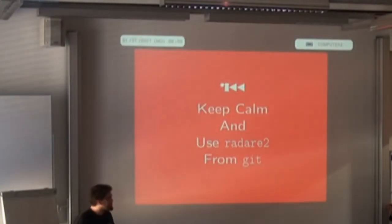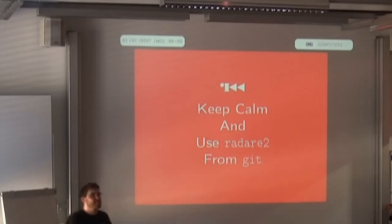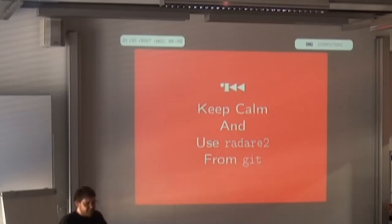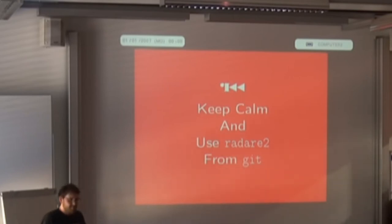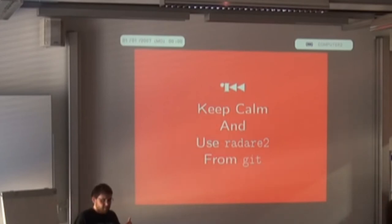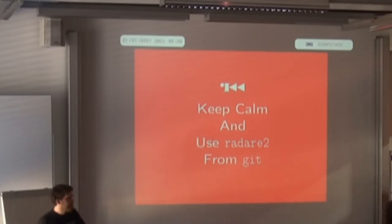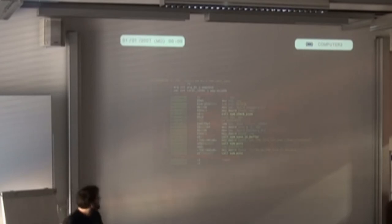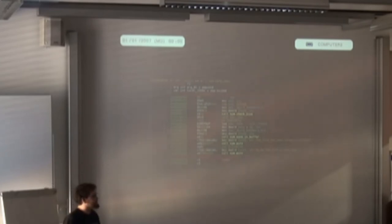Fortunately there is a tool for that. Keep calm and use Radare2 from Git. With Radare2 — first of all, nobody knows how to pronounce it correctly — but it's a reverse engineering toolkit. It has a lot of features: it's a hex editor, disassembler, it can emulate code, you can script it, it has so many features. But the thing we use most is basically the same as objdump, just with colors — so that's nice.